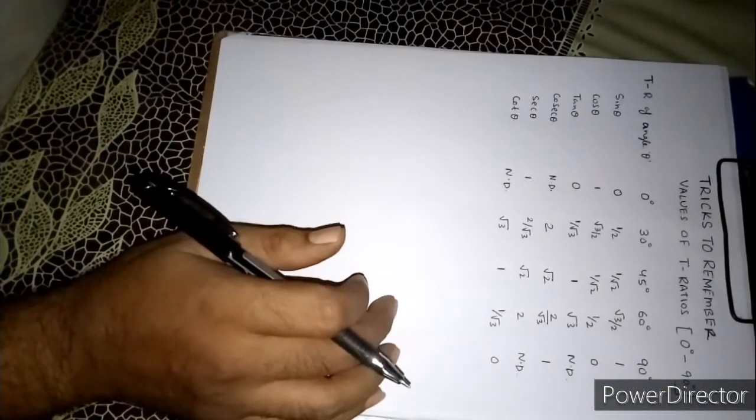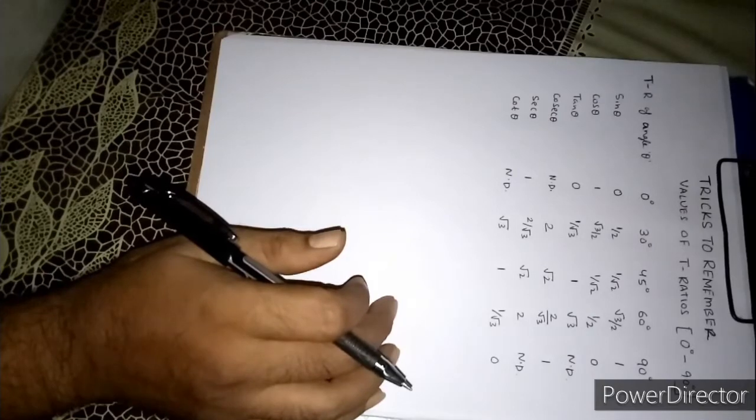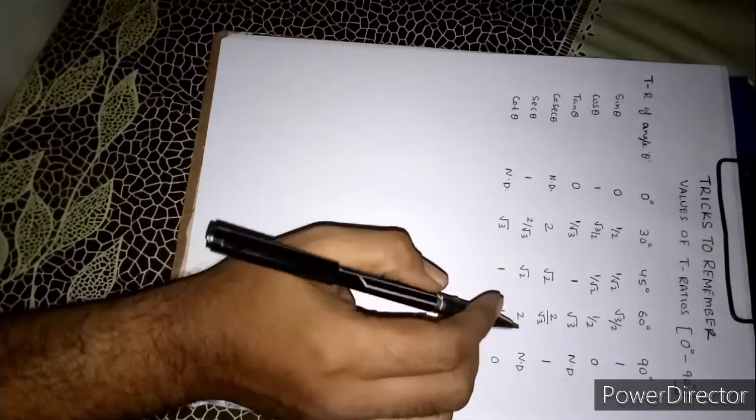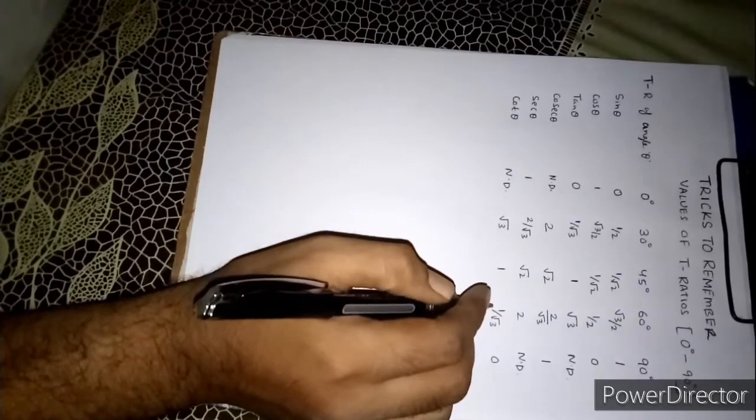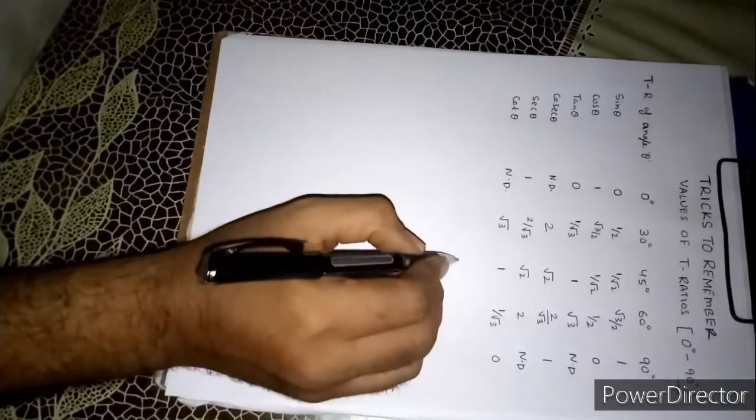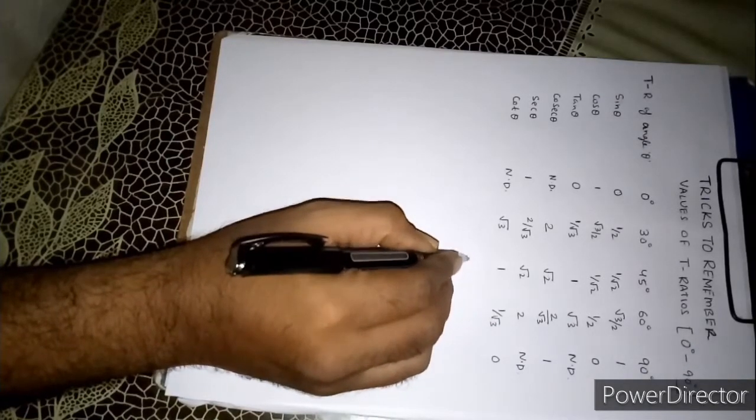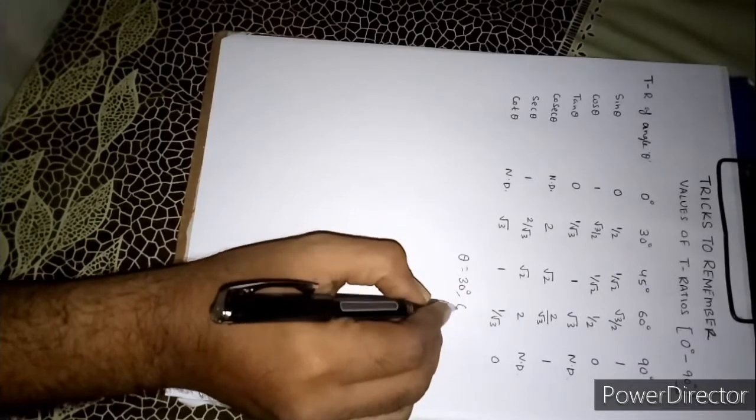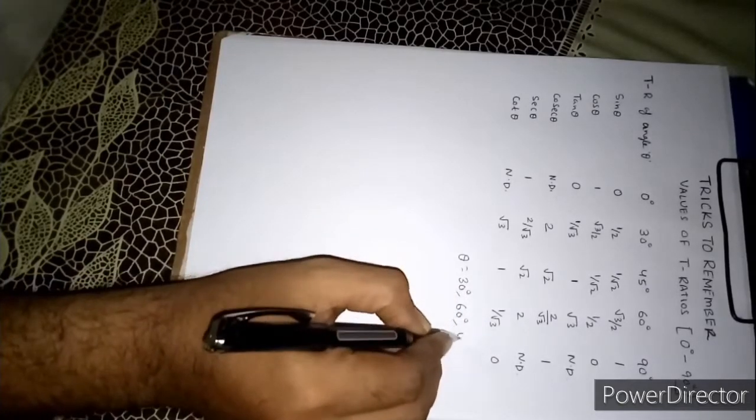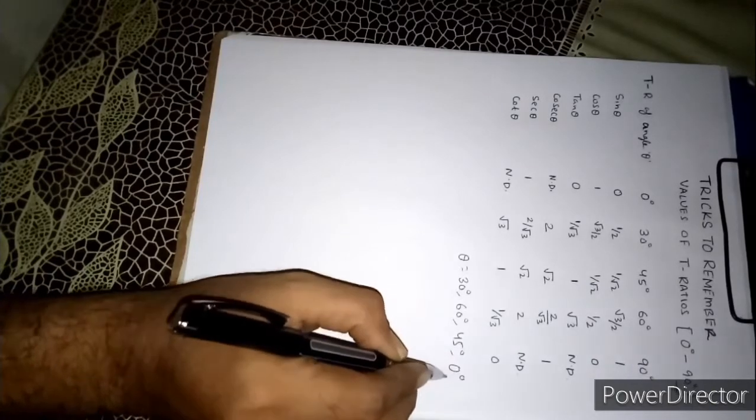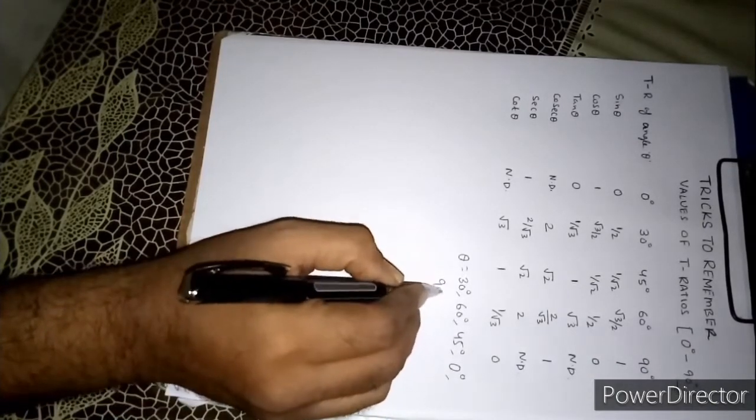Today we will learn some tricks that are necessary to learn the trigonometric ratios of angles. In your syllabus, generally you have to remember angle theta equals to 30 degree, 60 degree, 45 degree, 0 degree, and 90 degree.